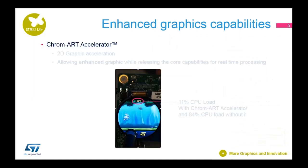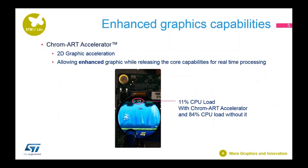The second message relates to graphics — Plus means more graphics. We have the ChromArt Accelerator, a 2D graphic hardware accelerator that releases the CPU for better graphic capabilities and provides advanced graphics. Several demos are available on the discovery kit or evaluation kit where you can turn ChromArt on or off and check its impact on CPU load. This allows reduced CPU load, better graphic capability, and also reduces power consumption.